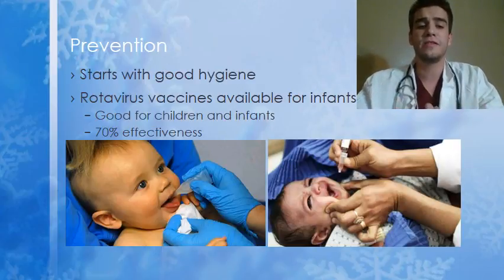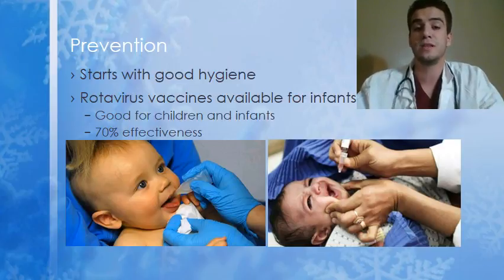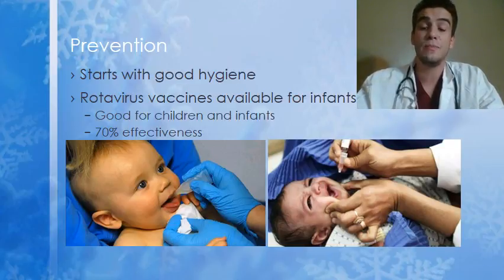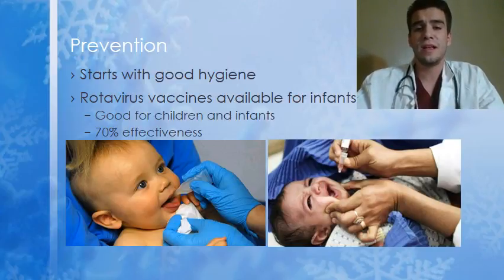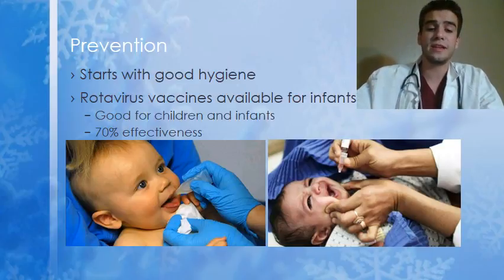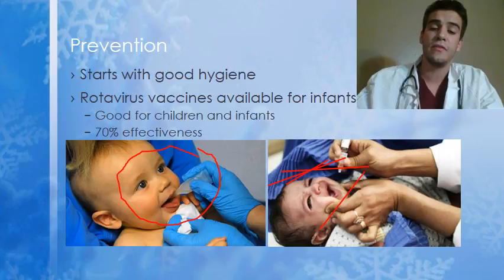This virus should be prevented through good hygiene, mostly washing hands especially after using the bathroom. Of course, children — especially those under two — often won't do this. So there are vaccines available for infants that are about 70% effective throughout childhood. Even with at least a 30% chance of still getting the virus, that's 70% more effective than not having the vaccine at all. The vaccine works effectively whether your child is happy to take it or not.